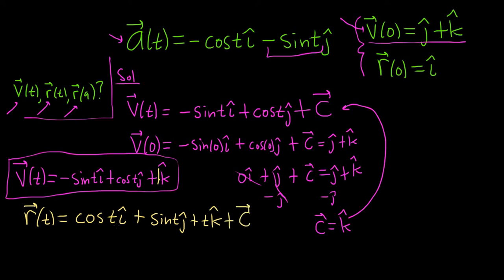We can easily check our answer by differentiating. If you take the derivative of cosine, you get negative sine. Checks. Take the derivative of sine, you get cosine. Checks. Take the derivative of t, you get 1. It checks.